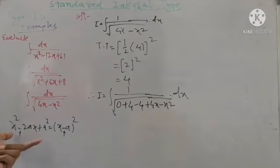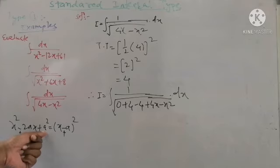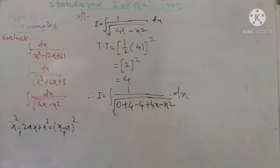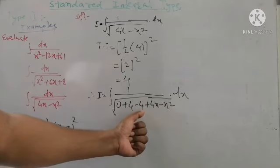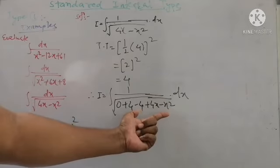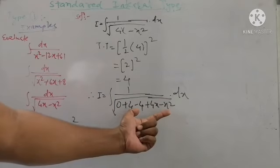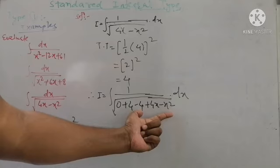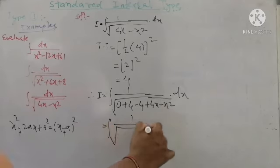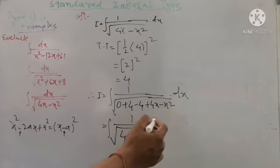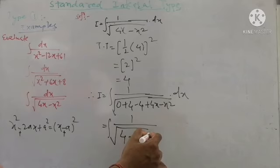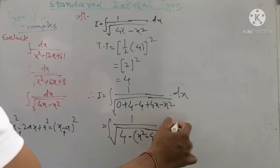In an expansion, squares are always positive. Here x² is negative, so we take minus sign common from the three terms. The integration becomes 1 upon root of: taking minus common gives +x² - 4x + 4 inside the bracket, with a leading constant of 4 outside. Rearranging: 4 - (x² - 4x + 4).